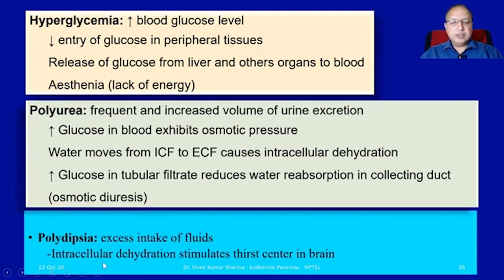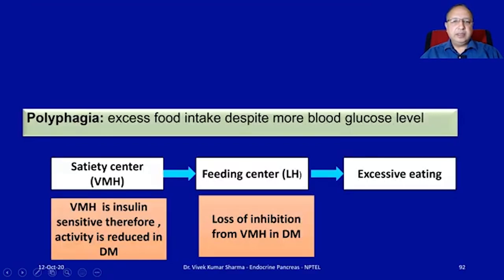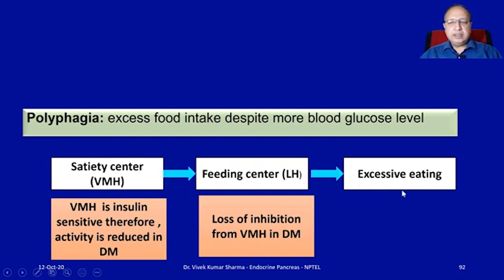Polydipsia — excessive fluid intake — occurs because intracellular dehydration stimulates the thirst center in the brain. Polyphagia — excessive food intake despite elevated blood glucose — occurs because the satiety center, the ventromedial hypothalamus (VMH), is insulin-sensitive. In diabetes, when glucose cannot enter the cells, the activity of the satiety center is reduced. This reduces its tonic control over the feeding center in the lateral hypothalamus, leading to unchecked activity of the feeding center and the tendency for excessive eating.